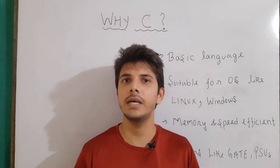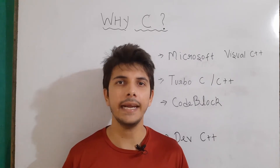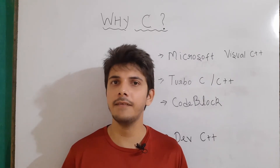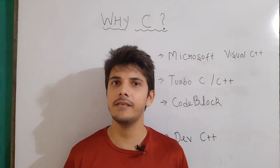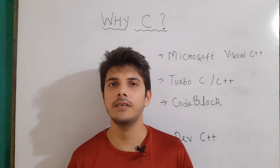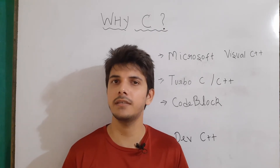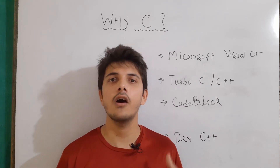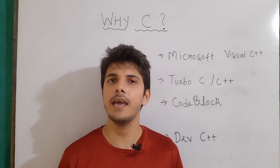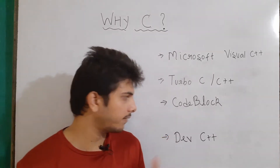Now let's talk about some of the compilers that we can use for C language. There are basically endless compilers that we can use to make programs in C. I have written here four of these compilers: first, we have Microsoft Visual C++; then we have Turbo C or Turbo C++; then we have CodeBlocks; and at the end, we have Dev C++.